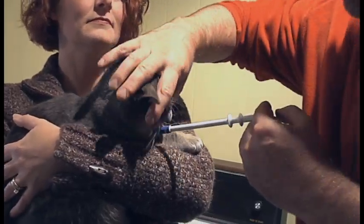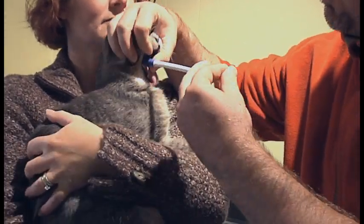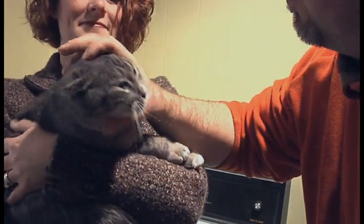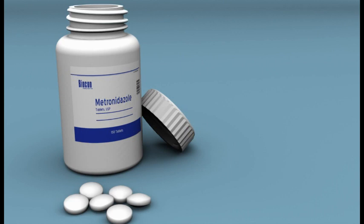The treatment for Giardia consists of administering an oral medication to eliminate the shedding cysts within the intestinal wall. The medication of choice for cats is generally metronidazole.